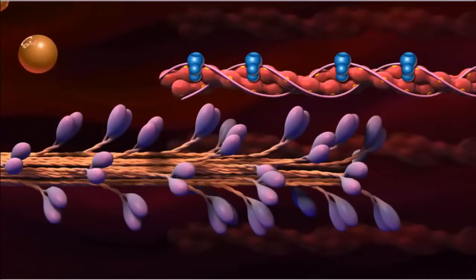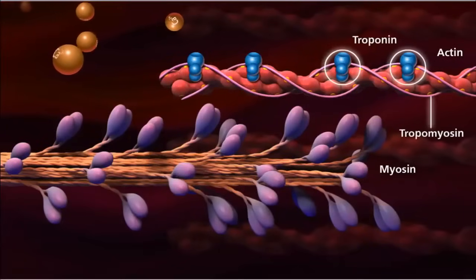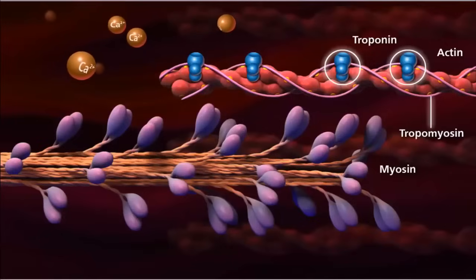Muscle contractions are controlled by the actions of calcium. The thin actin filaments are associated with regulatory proteins called troponin and tropomyosin. When the muscle is relaxed, tropomyosin blocks the cross-bridge binding sites on actin.